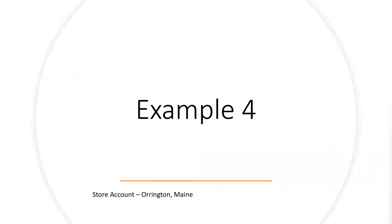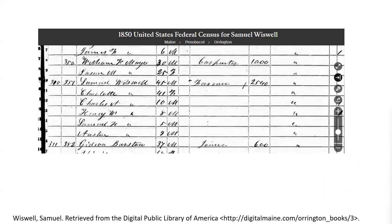Example number four: a store account from Orrington, Maine. Samuel Wiswell in 1850 and 1860 was basically a farmer in Orrington, Maine — up towards the northern border. He has a family: Charlotte and a bunch of children including Charles, Henry, Samuel, and Austin. The value of his farm is a little more than those living around him, suggesting it was larger. But when looking just at the census record, we're not really getting a sense of what kind of business he was running — it just appears he's a farmer. We go forward to 1860 and see the same thing, with the value of his land increased over 10 years.